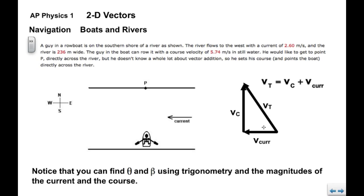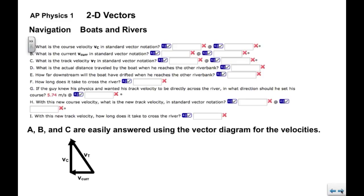Now using some trigonometry and the magnitudes of the current and the course, you can do inverse tangent of course over current to get this angle, and then subtract from 180 to get the mathematical angle of the track velocity. You just need to know a little trig.